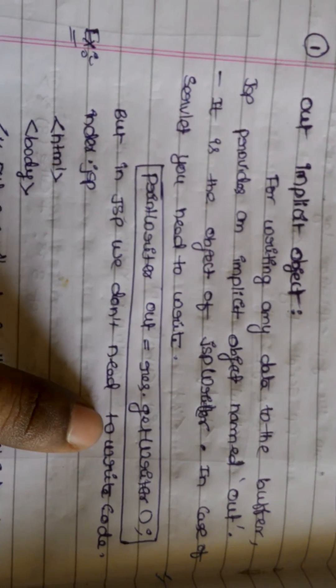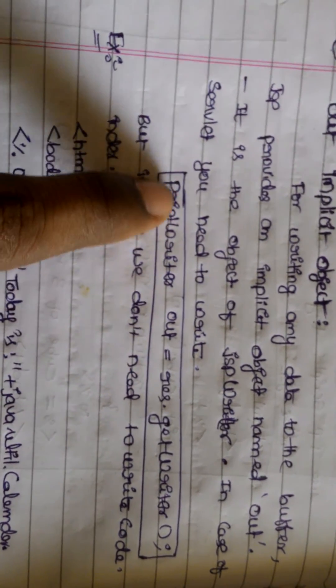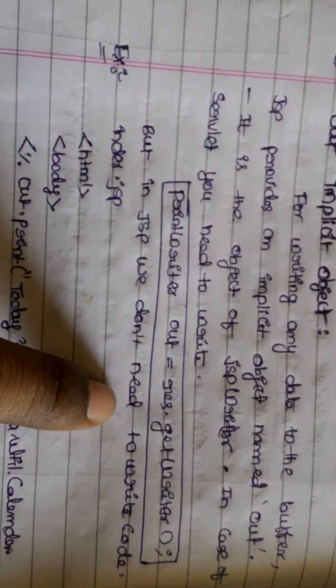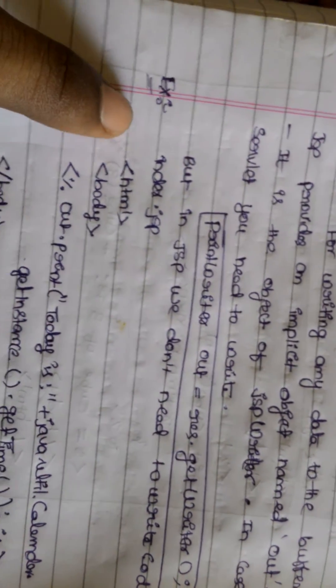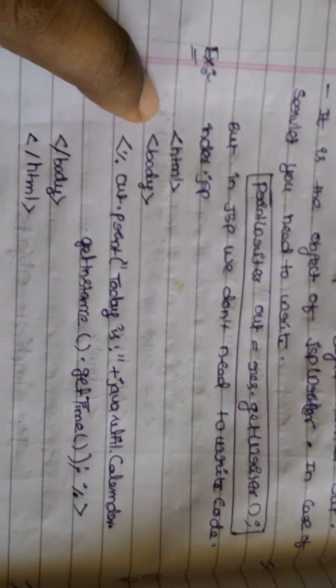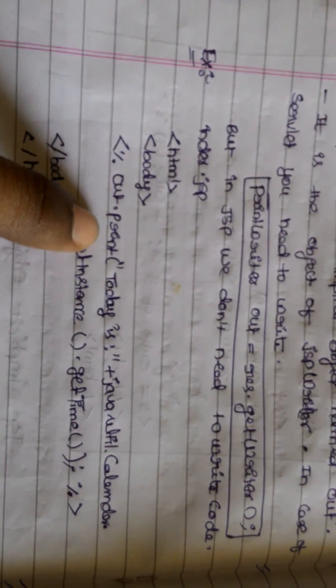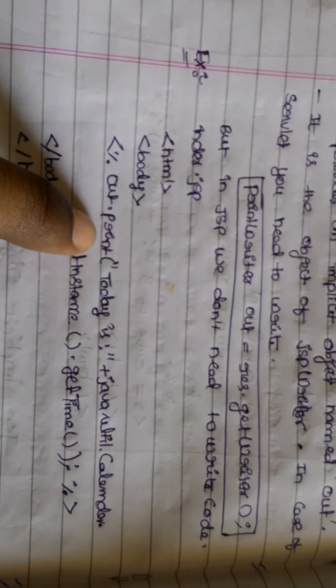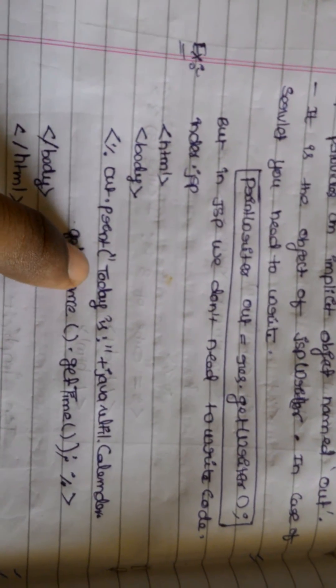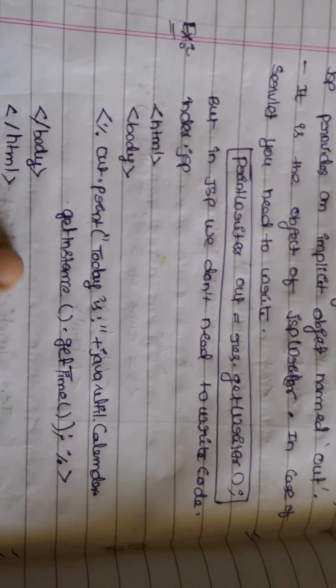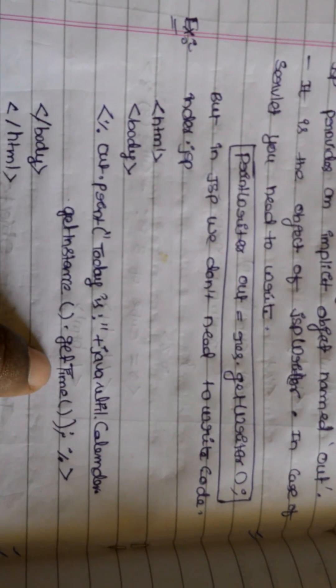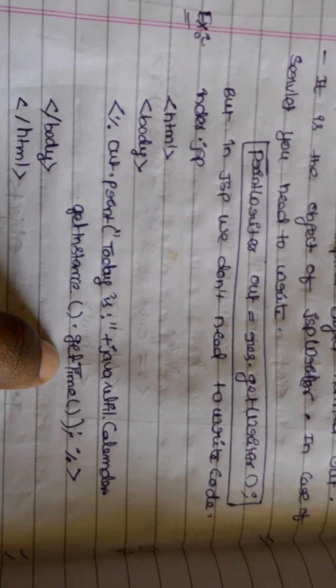But in JSP we don't need to write this code directly. For example, HTML code you can write. We just use out.print() or out.println(). We pass something here - print the current date, system date, system time. This is the use of out implicit object.